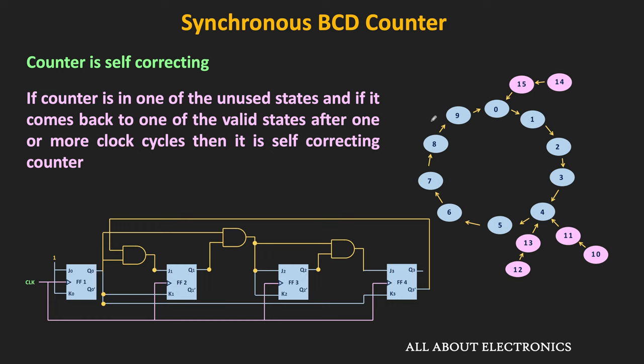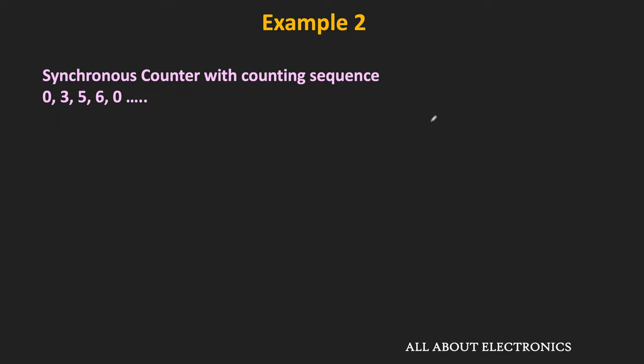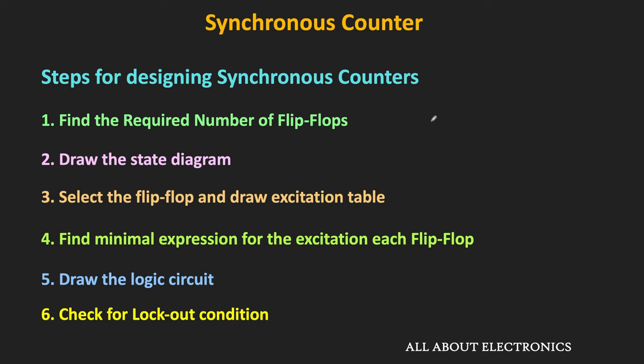If the counter is not self-correcting, we need to modify the existing circuit. Let us take the second example, where the counter is not self-correcting, and see how we can modify it. We need to design a counter that counts in the specific sequence: 0, 3, 5, 6 — and then comes back to 0.